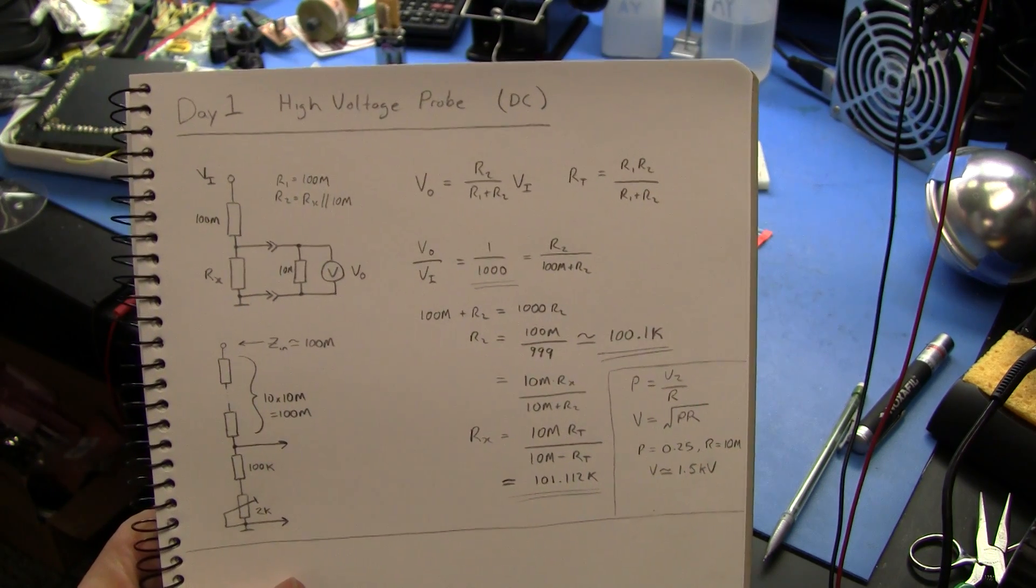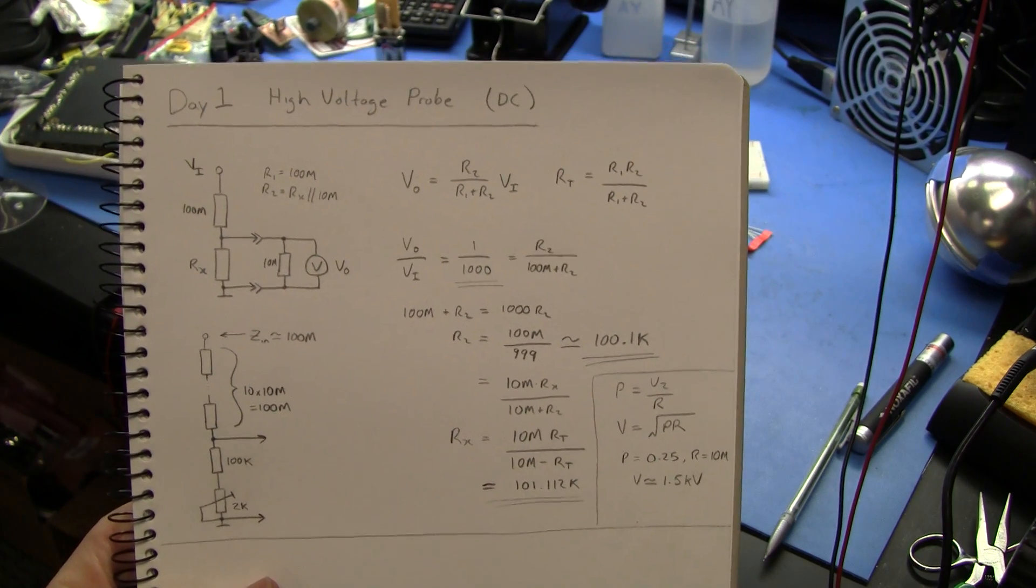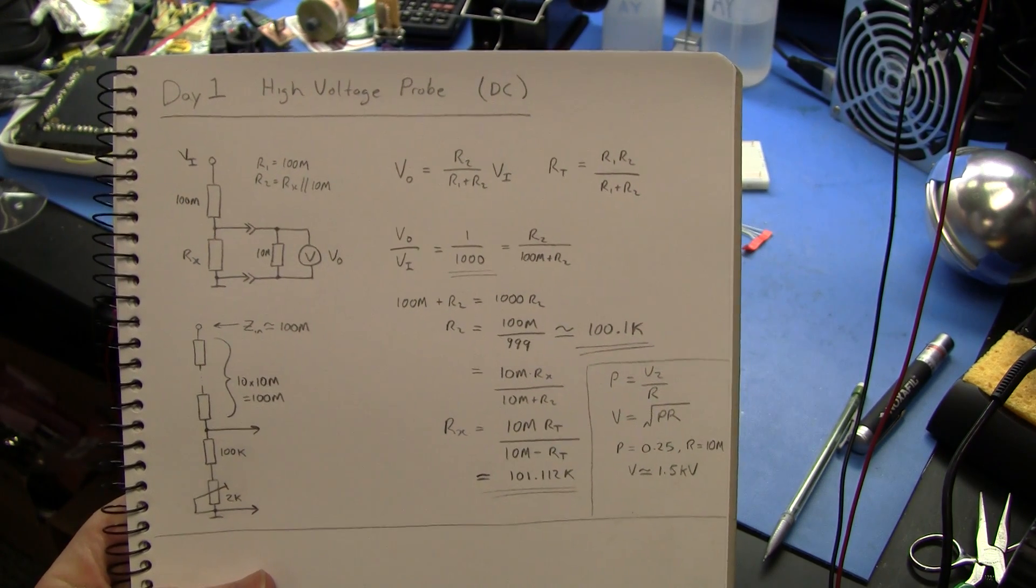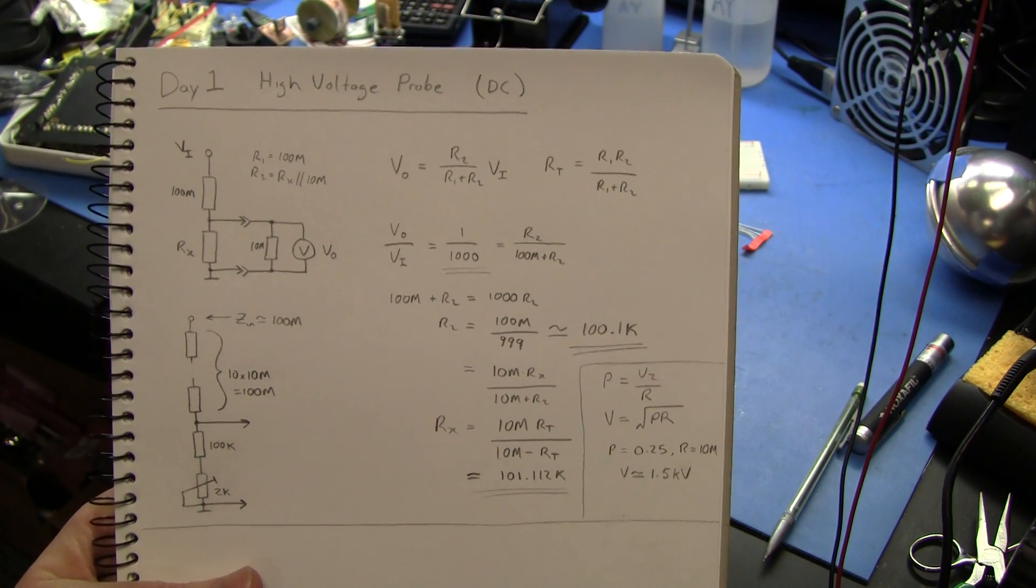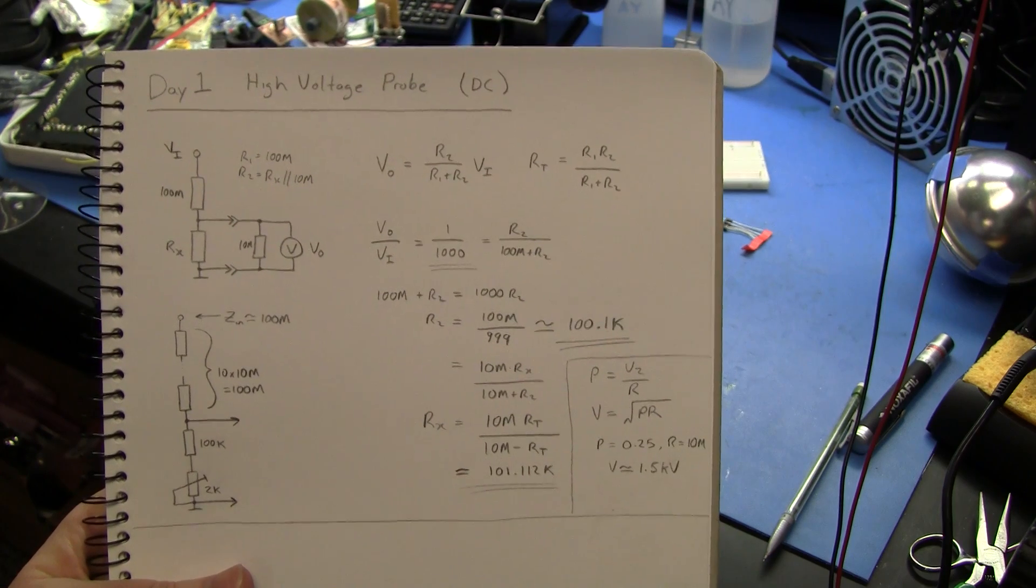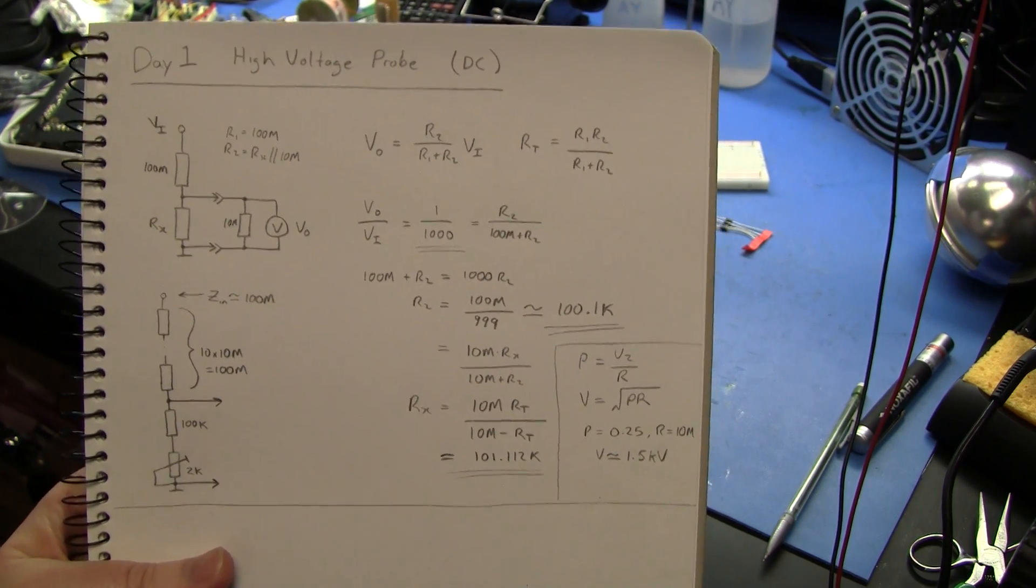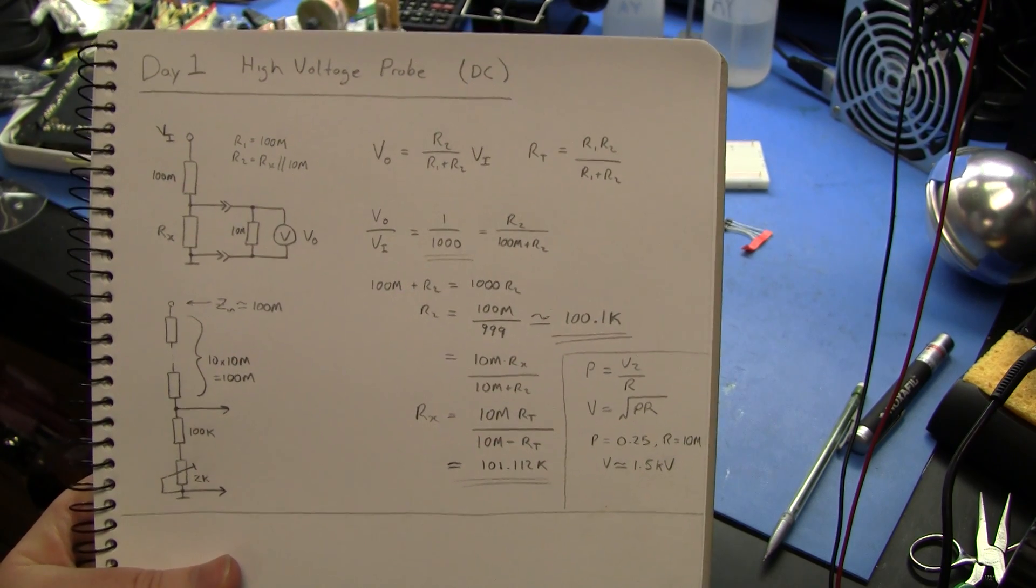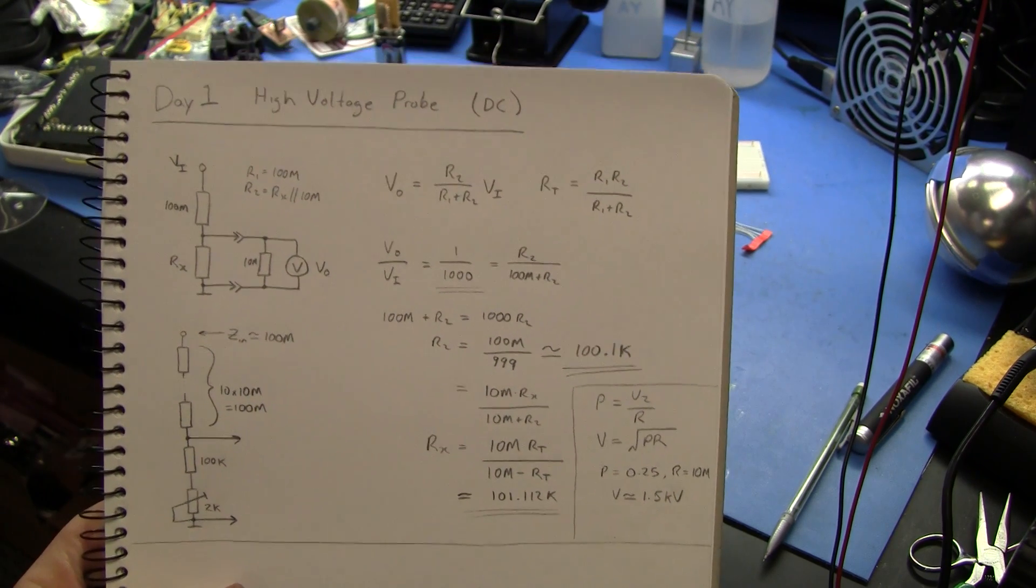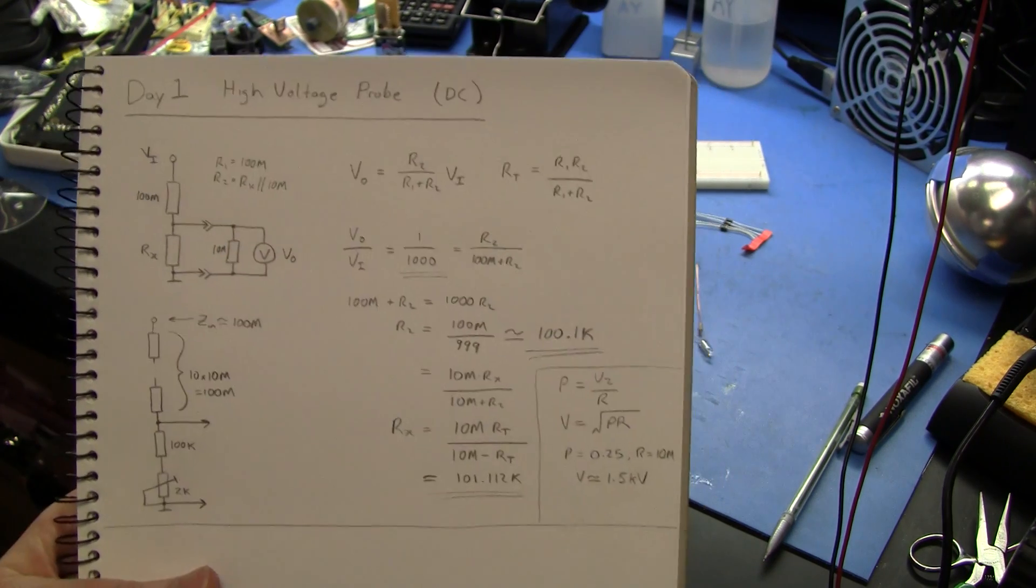High voltage probe. Many of the projects that I was thinking about doing this time around involve moderately high voltages. A couple hundred volts you can easily measure with a normal digital multimeter, but when you start getting up into a couple of kilovolts, it's handy to have some kind of high voltage probe, and it's an interesting and fairly simple exercise to design one, at least for DC. An AC one is a bit more complicated, and we might talk about that in another day.